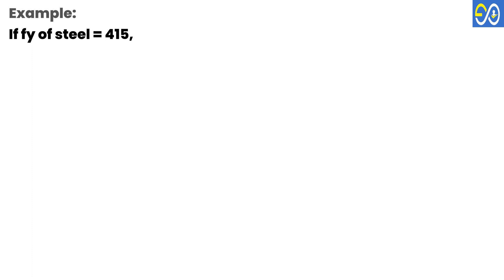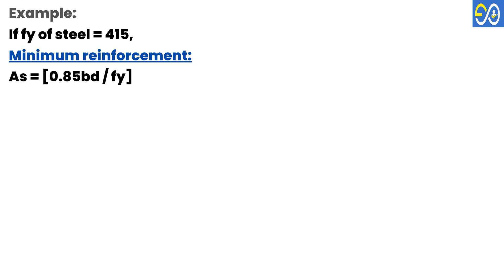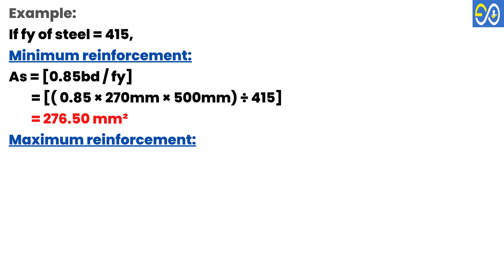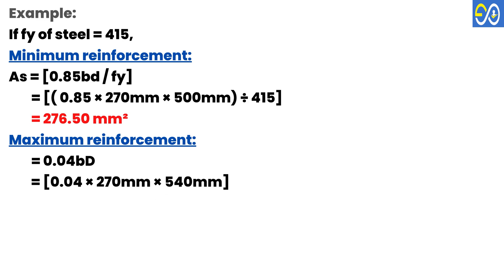Example: If f_y of steel equals 415, then minimum reinforcement A_s = 0.85 × 270 × 500 / 415 = 276.50 square millimeters. Maximum reinforcement A_s = 0.04 × B × D = 0.04 × 270 × 540 = 5832 square millimeters.